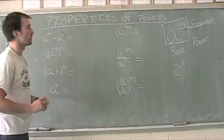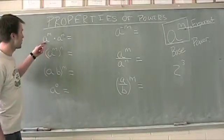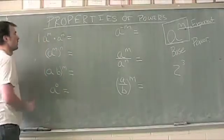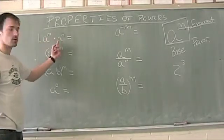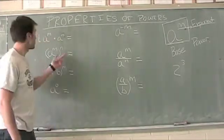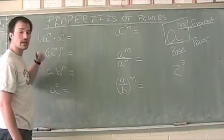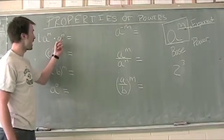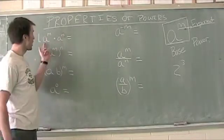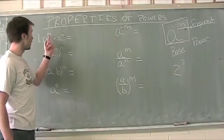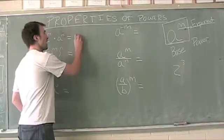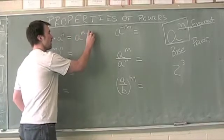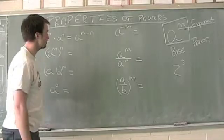Looking at properties of powers. The first property, property number 1, is what's known as a product of two powers. Something to notice here is we've got a to the m power times a to the n power. When you have the same base and you're multiplying, we can simply add our exponents together. So this becomes a to the m plus n power.